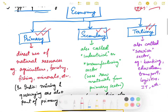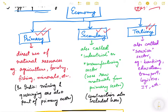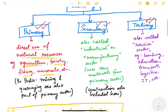The primary sector is a sector where there is a direct use of natural resources to carry out economic activity. Examples of the primary sector include agriculture, forestry, fishing, and mineral resources. In agriculture, the farmer directly uses natural resources like seeds and soil to get output and generate income. Similarly, forestry, fishing, and minerals all fall under the primary sector.